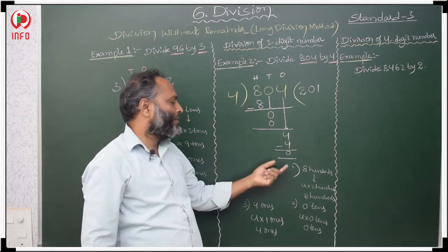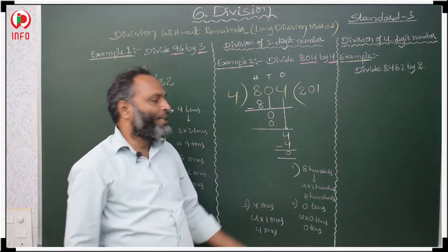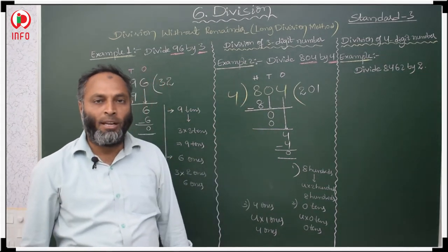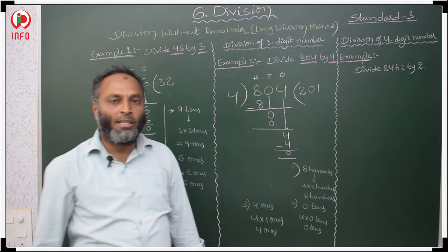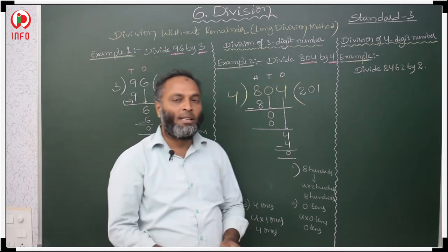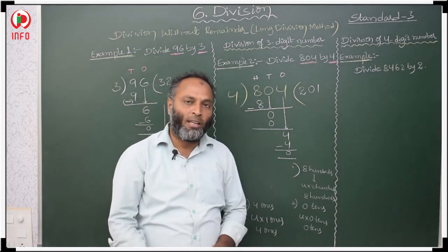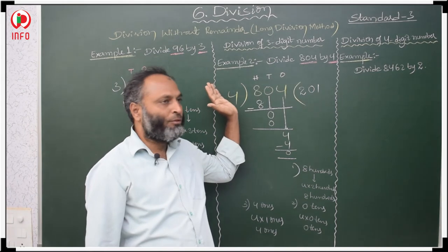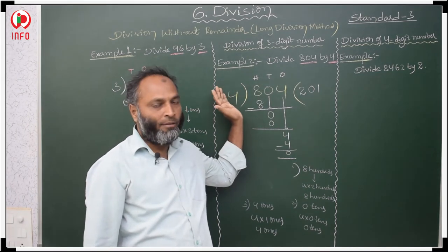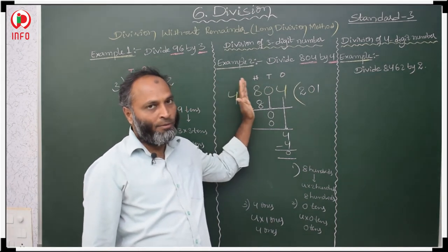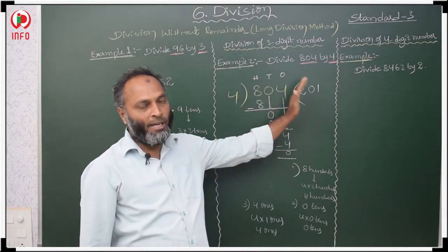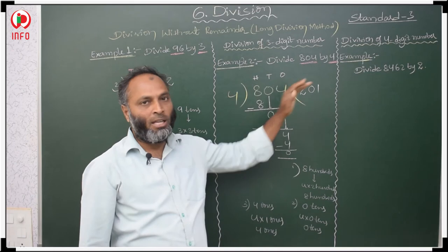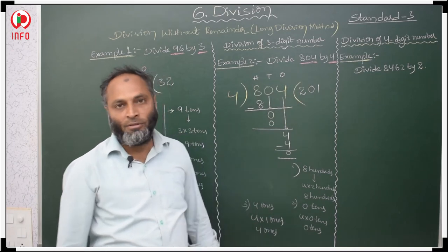This is how we do it when a 3-digit number is given. Step by step, we move from extreme left to right.